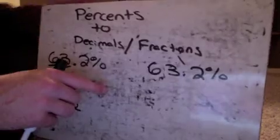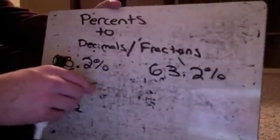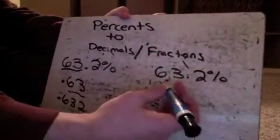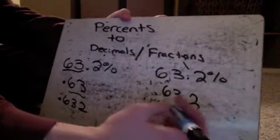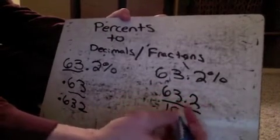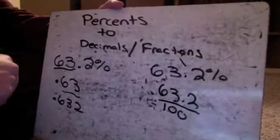Now, over here, if we have 63.2%, we just put it over 100. So we have 63.2 over 100. Now, the thing is, we don't really want to leave it like this.